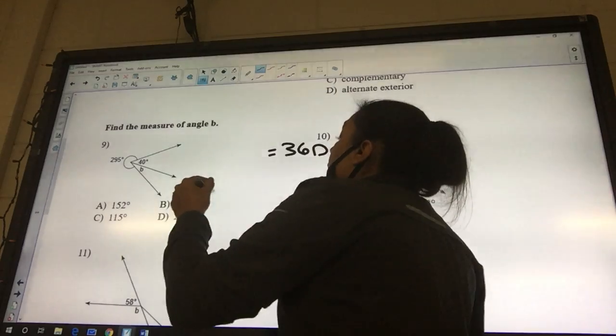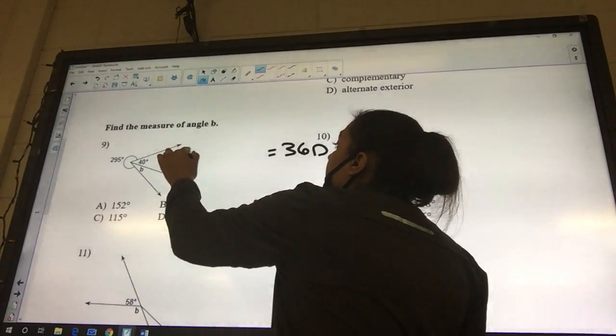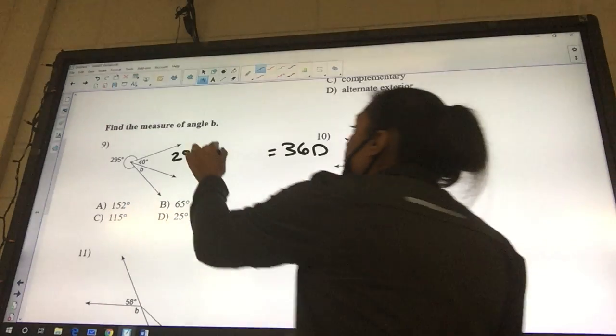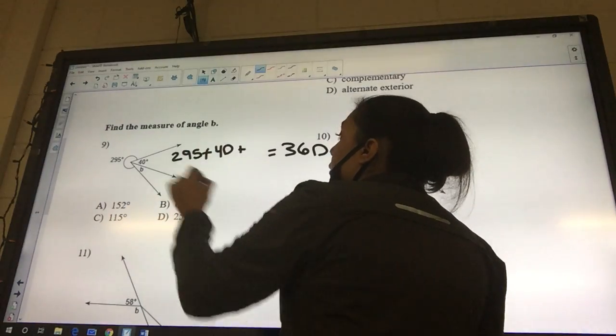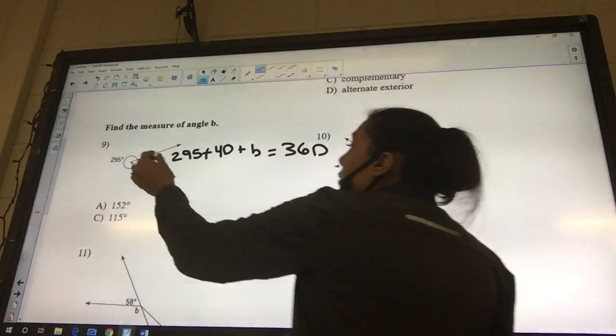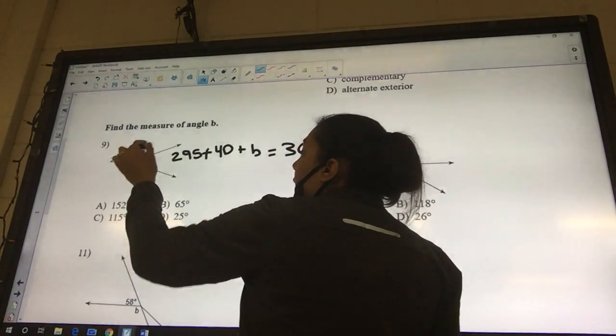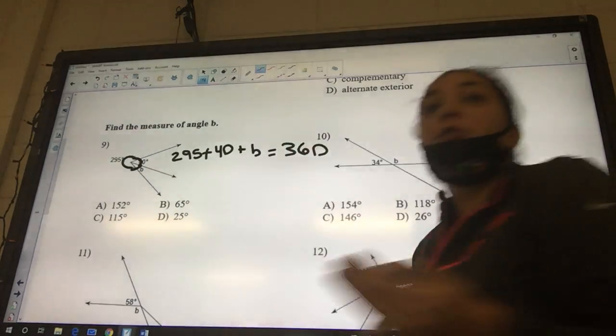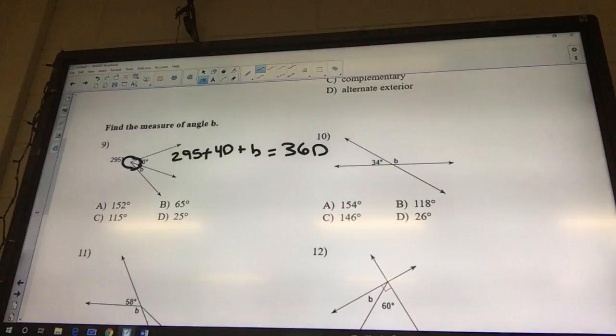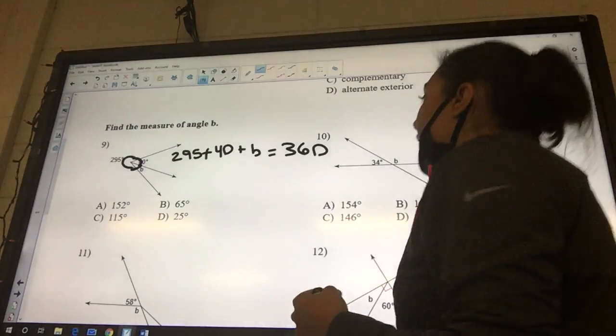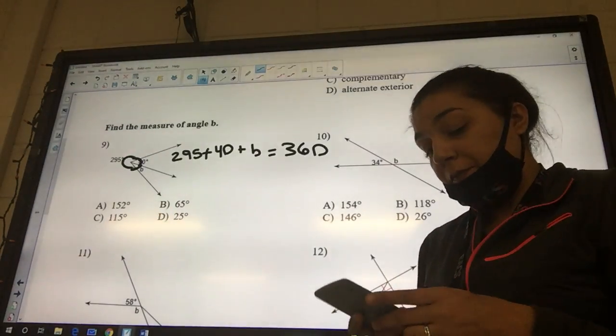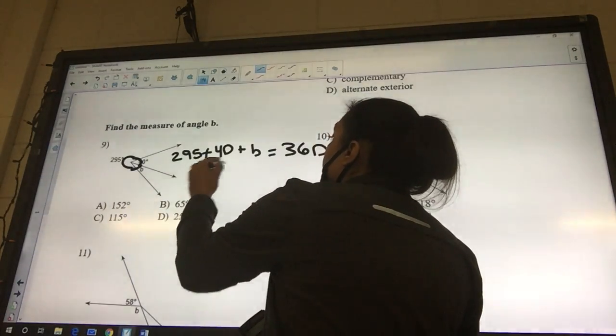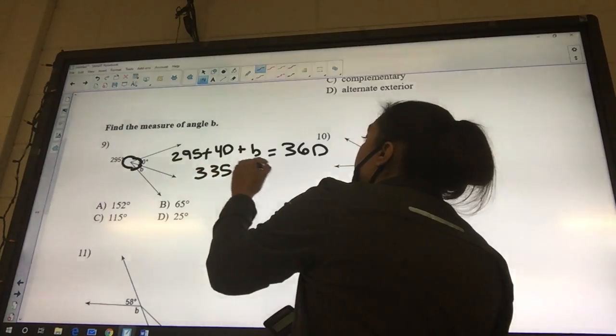But what do we know one of the angles definitely is? We're trying to get all the way around the circle. So we took this 295, and then we looked at this 40, and then we looked at this b. I made a full circle, so I know that should equal 360. So 295 plus 40... 335 plus our b equals 360.